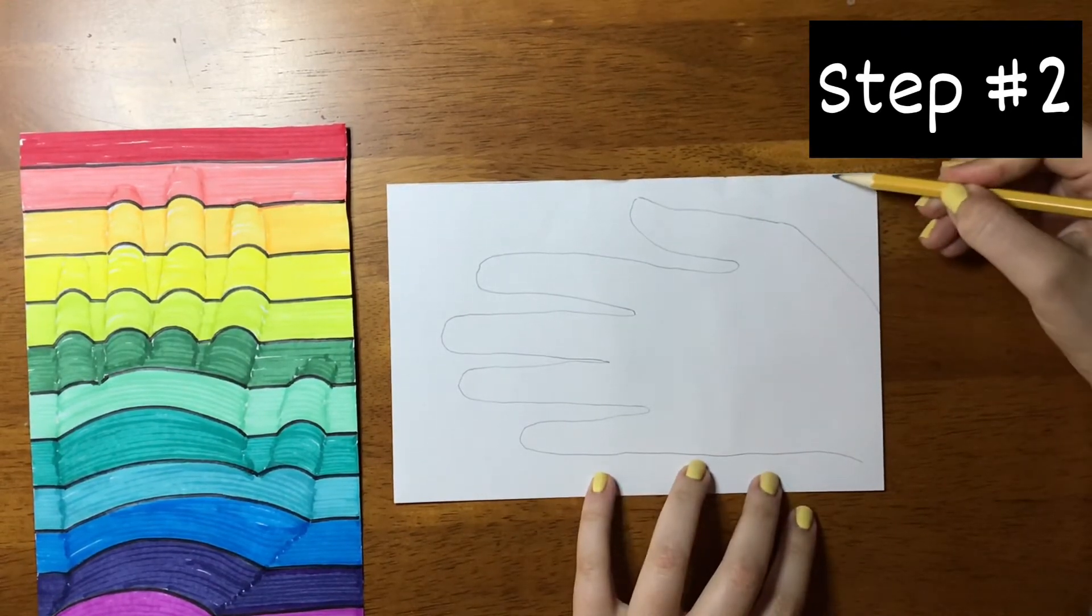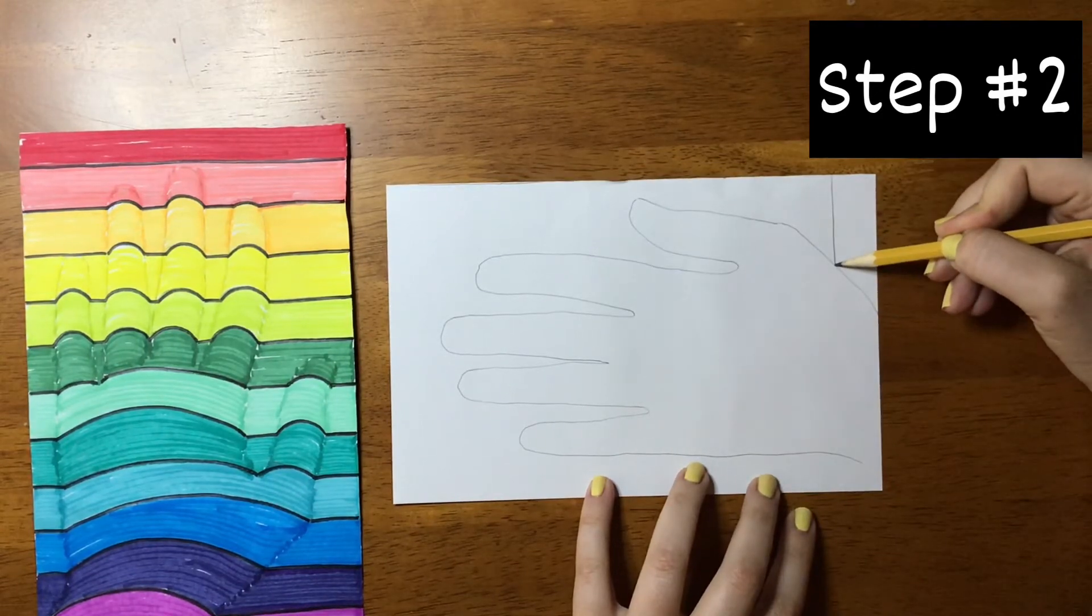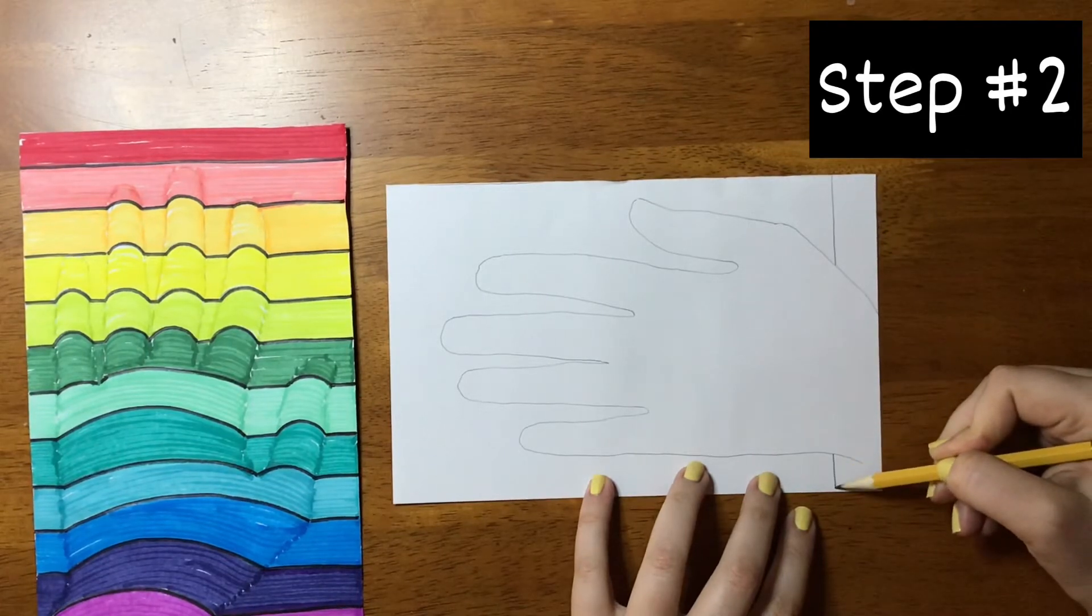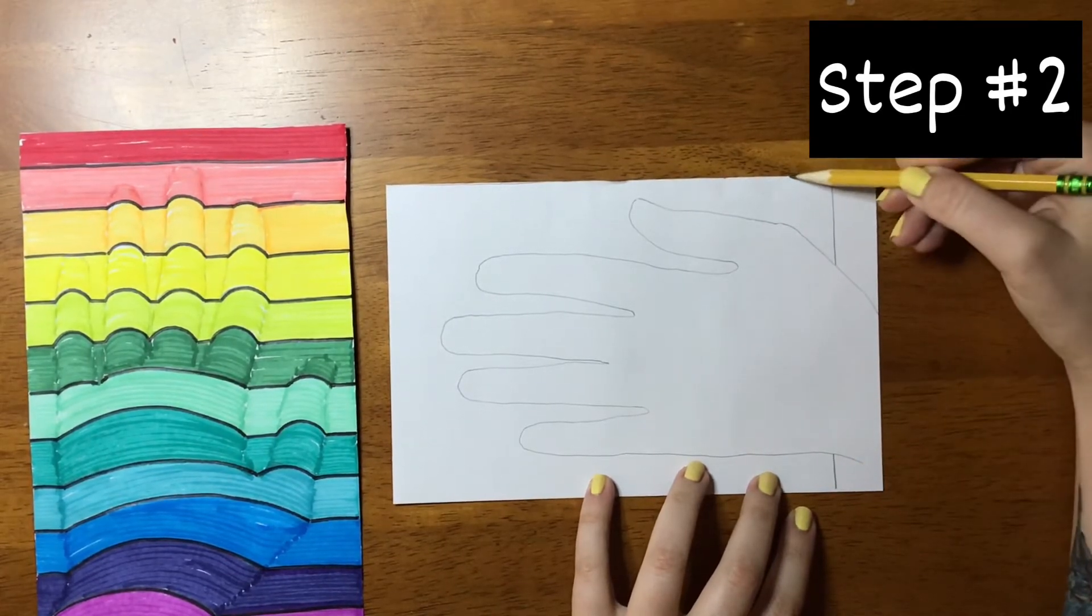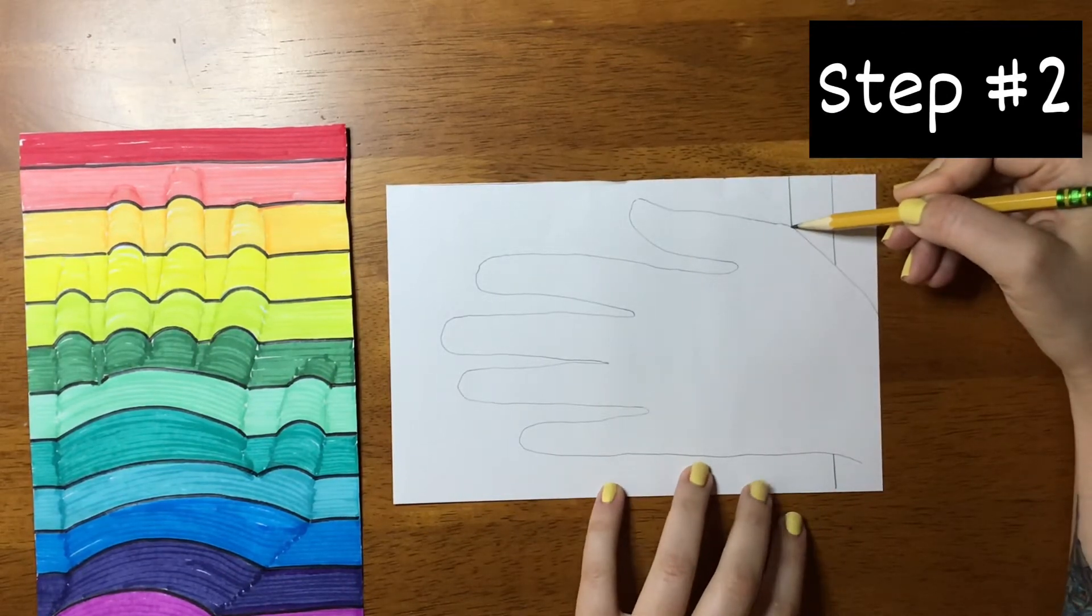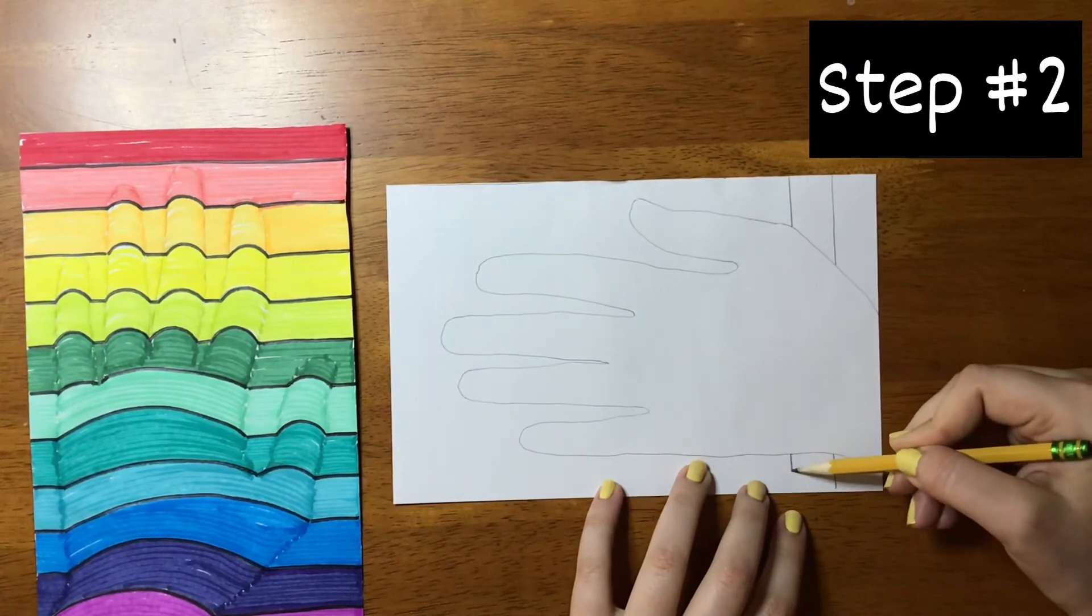So I'm going to start at the edge, go down, once I hit my outline, stop, jump, and finish it on the other side. So start at the top, go down, once it hits my outline, stop, jump, and finish it on the other side.